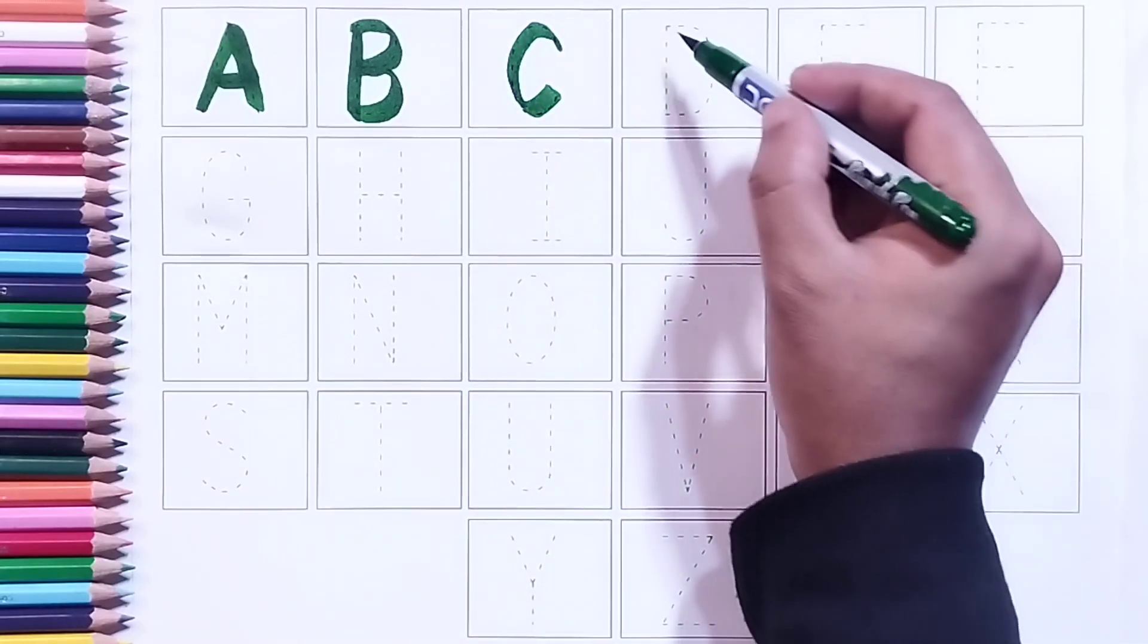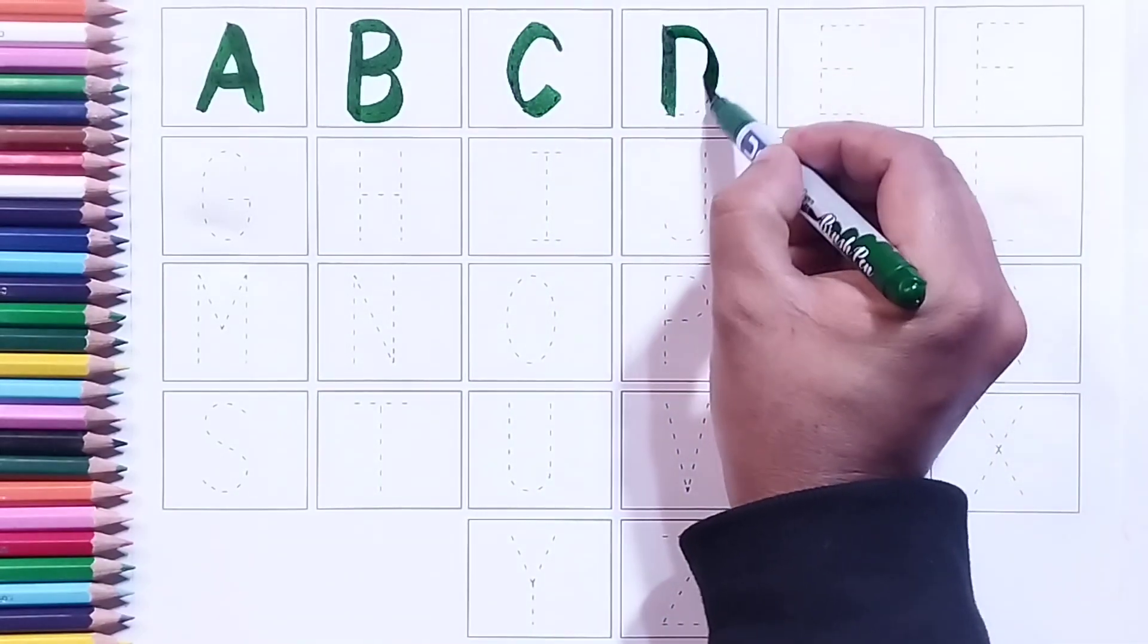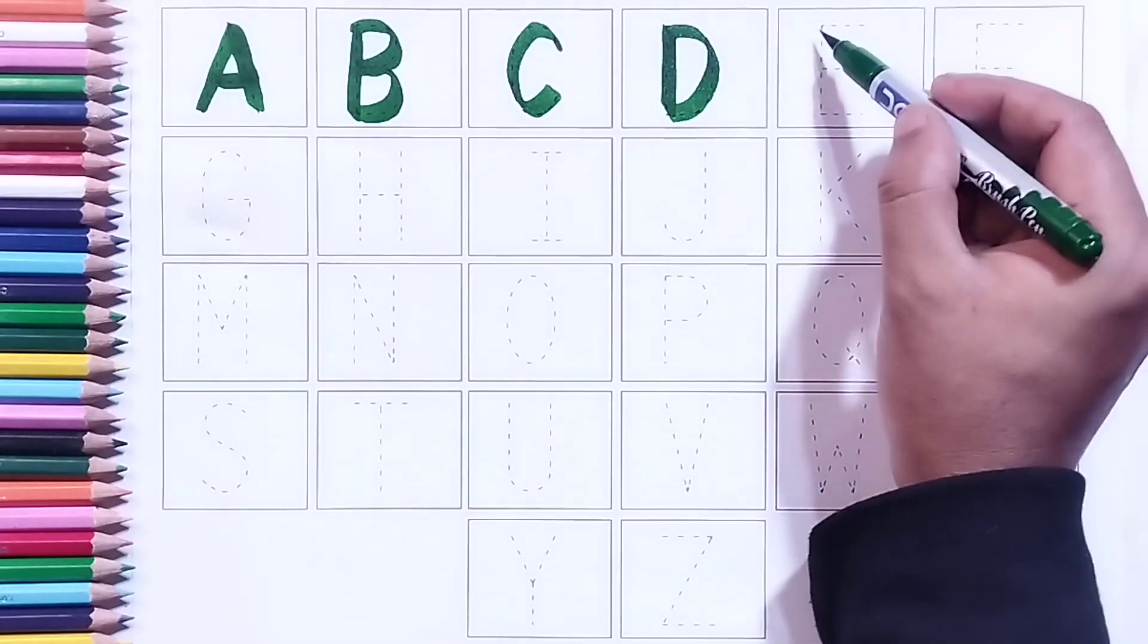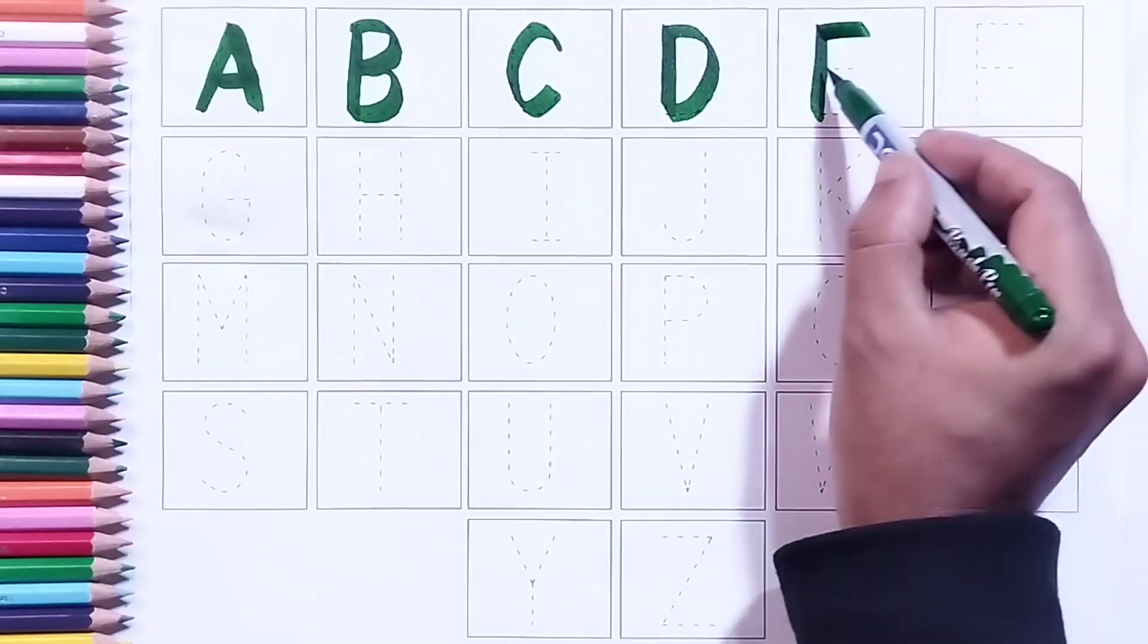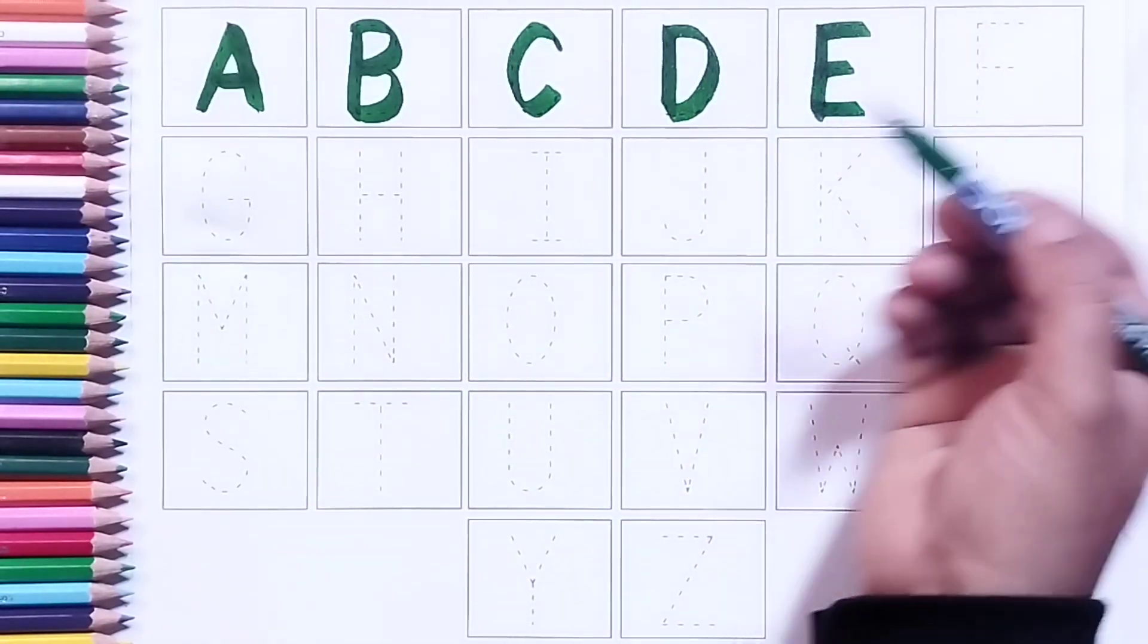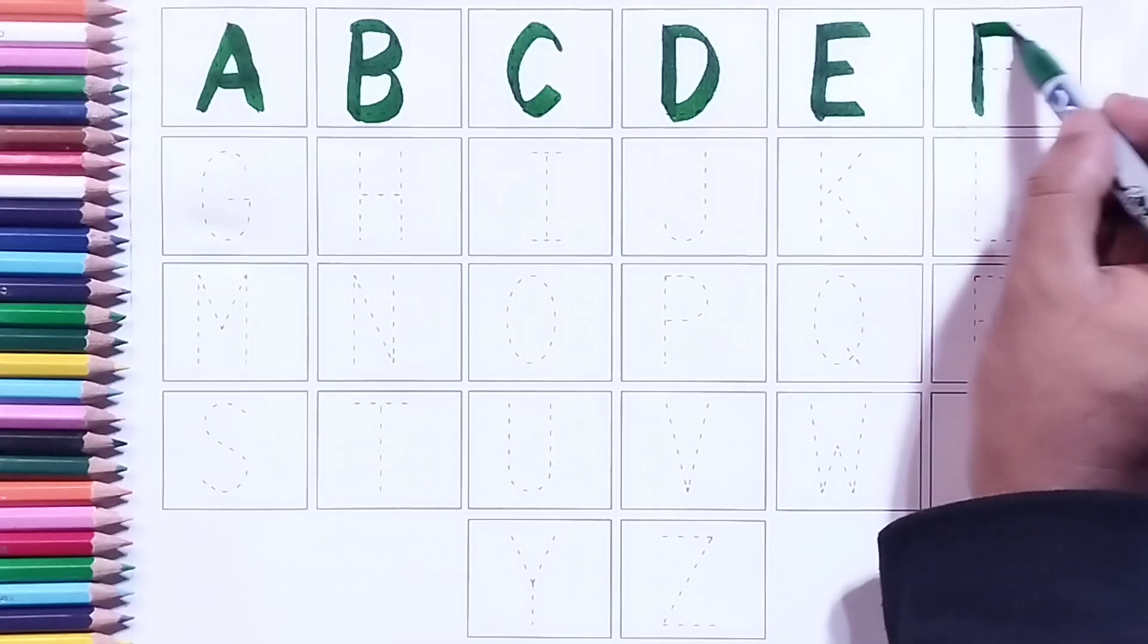C for cat. Green color. D, D for dog. Green color. E, E for elephant. Green color. F, F for